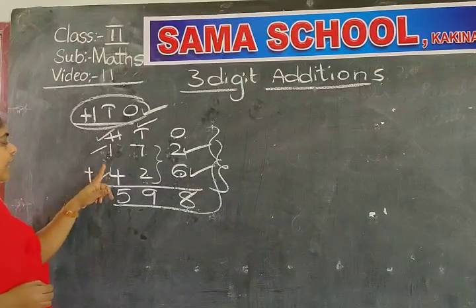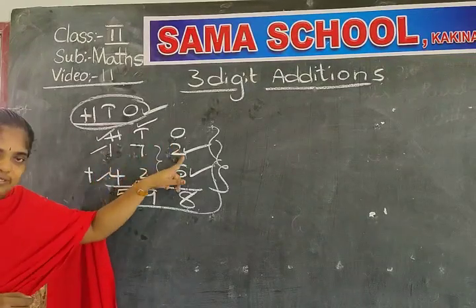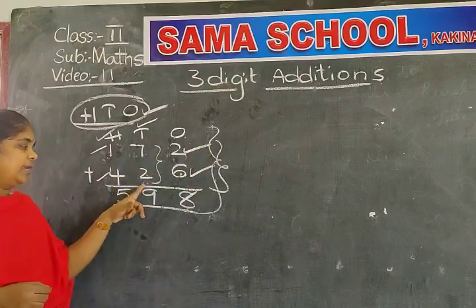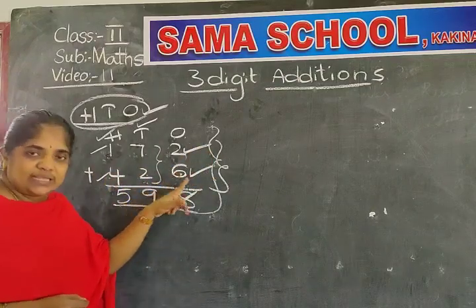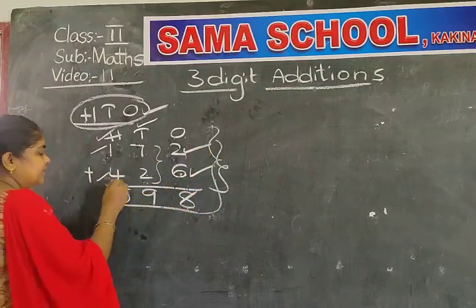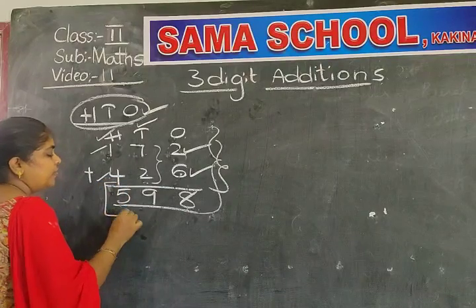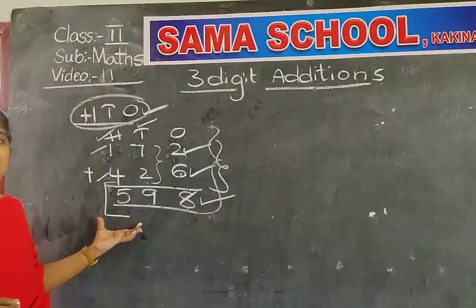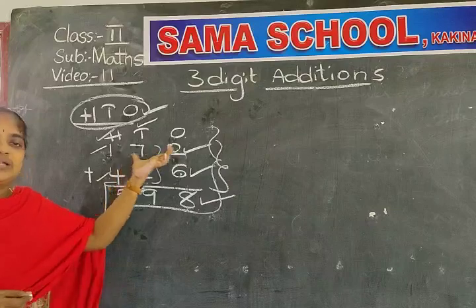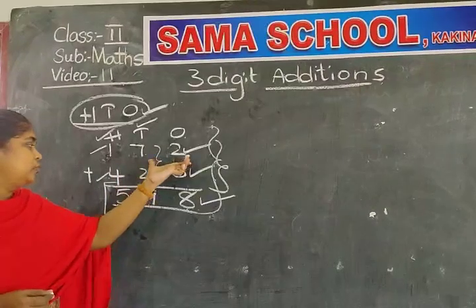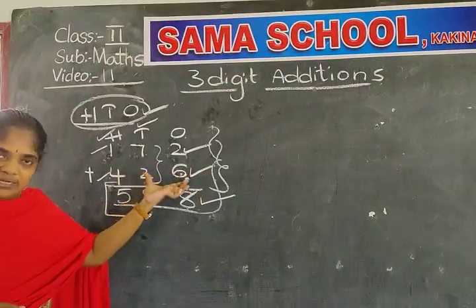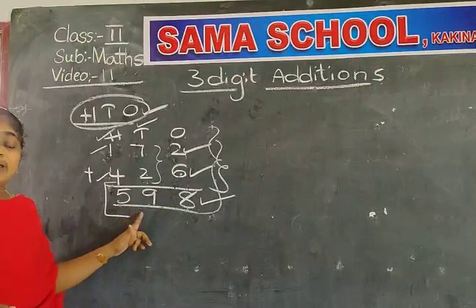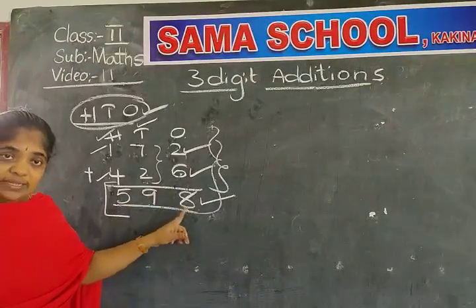If you add 172 plus four hundred and twenty-six, you will get the sum of five hundred and ninety-eight. If you add 172 and four hundred and twenty-six, you get five hundred and ninety-eight.